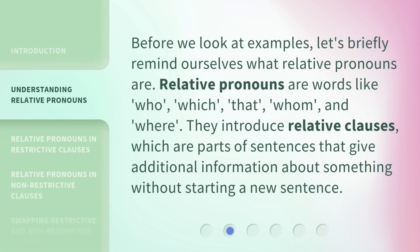Before we look at examples, let's briefly remind ourselves what relative pronouns are. Relative pronouns are words like who, which, that, whom, and where. They introduce relative clauses, which are parts of sentences that give additional information about something without starting a new sentence.